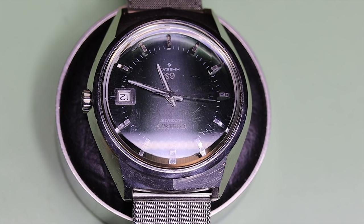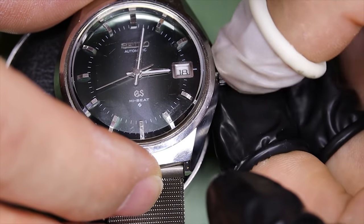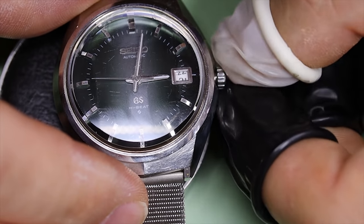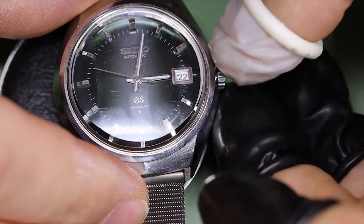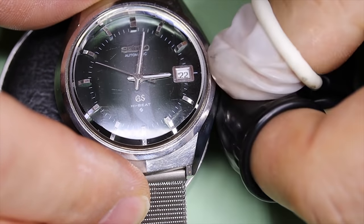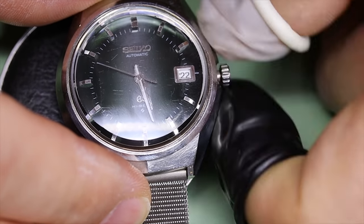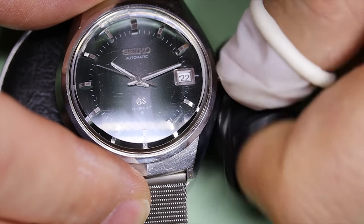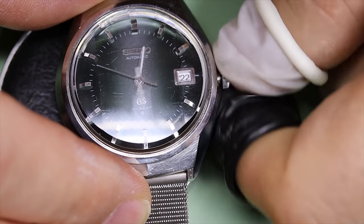This 6145-8050 is certainly not your standard Grand Seiko. As mentioned, it's very rare, made in a limited time period. It has a 36 bph movement, 6145A, and a beautiful dial.